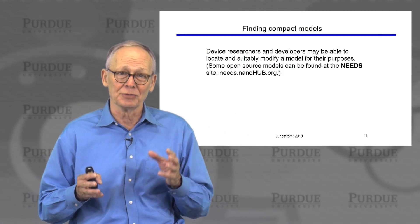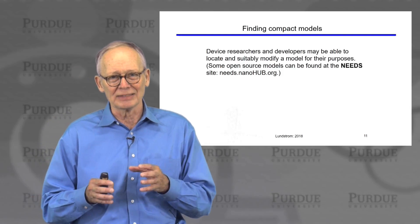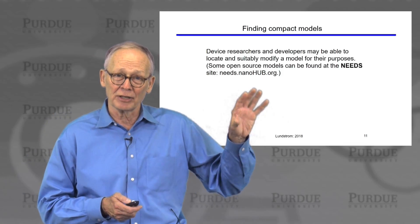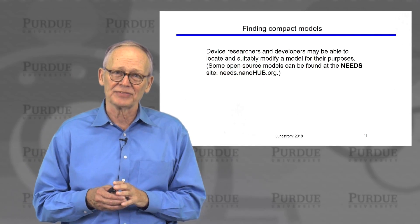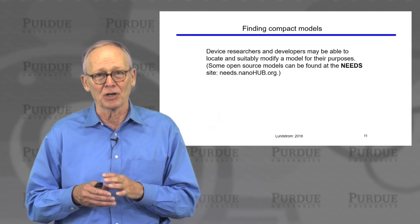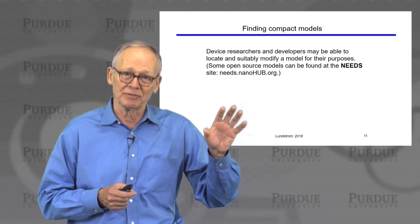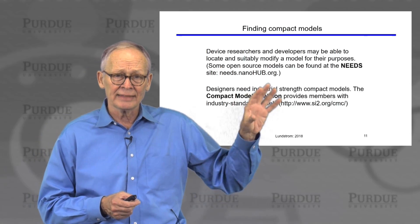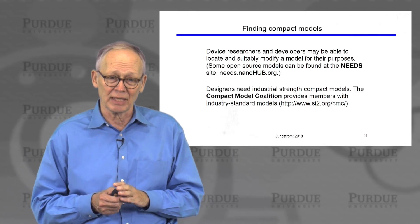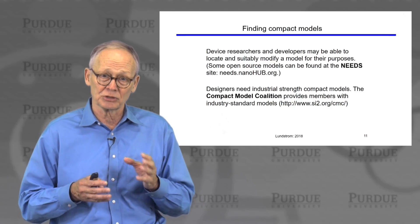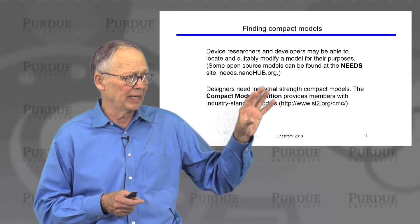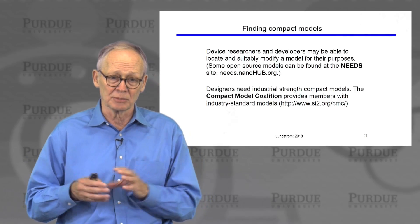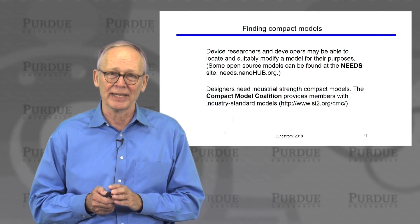Where do you find a compact model? Unfortunately there is no single repository. There are a couple of places to look. One is the NEEDS website, which has almost 50 open-source compact models that researchers from across the world have submitted. You might find one that suits your purposes, or one that's close that you can modify. For designers who need robust industrial-strength models, there is the Compact Model Coalition — a coalition of companies formed to support the development and ongoing support of these kinds of models. They have a variety of models that many companies rely on, continuously maintained and supported.